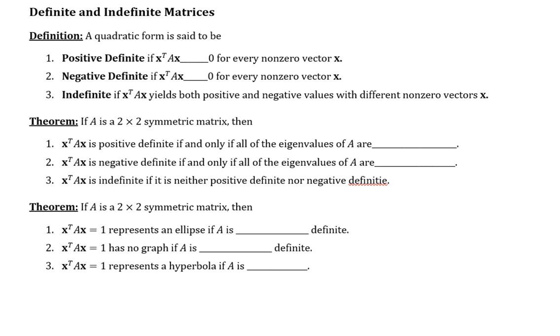A quadratic form is said to be positive definite if when you form the product X transpose AX, which is going to be a real number by the way, is greater than zero for every nonzero vector X. So a vector X that has at least one nonzero entry.